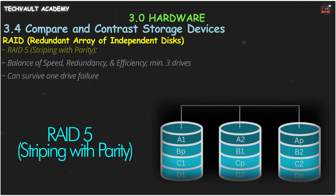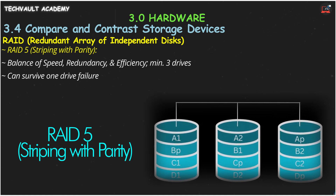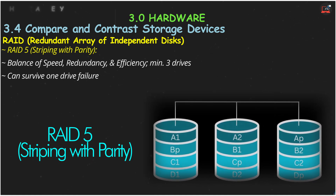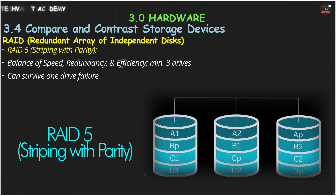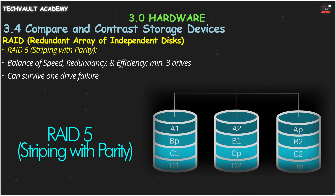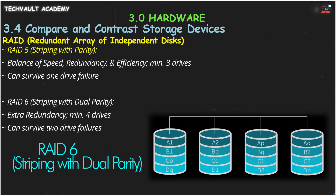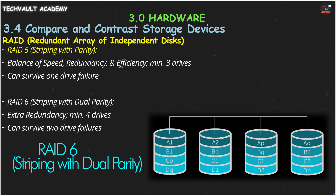RAID 5, striping with parity, is a smart compromise. It stripes data across at least three drives and includes a special checksum called parity. This allows you to lose any one drive and rebuild the data — it's a good balance of speed, safety, and storage efficiency. RAID 6, striping with dual parity, is extra safe. It's like RAID 5, but with two sets of parity, so it can withstand the failure of any two drives. It requires at least four disks.